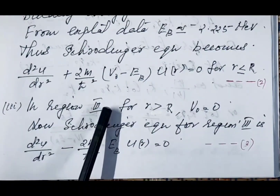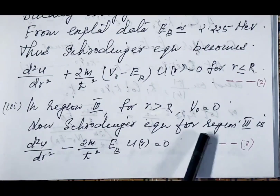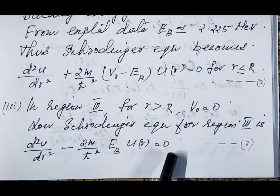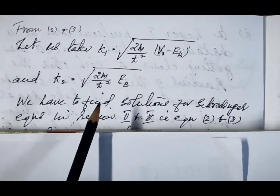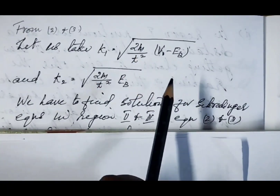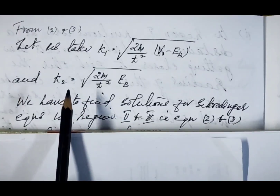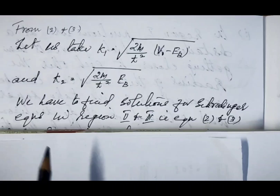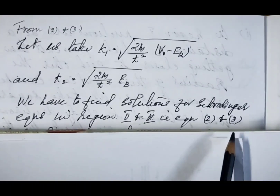In region 3, for r > R, V₀ = 0 — there is no potential outside the square well. The Schrödinger equation for region 3 modifies to: d²u/dr² − (2m/ħ²)·E_b·u(r) = 0. Let this be equation number 3. From equation 2, we define k₁ = √(2m/ħ²·(V₀ − E_b)), which is the coefficient of u(r) in region 2. From equation 3, we define k₂ = √(2m/ħ²·E_b), which is the coefficient of u(r) in region 3.